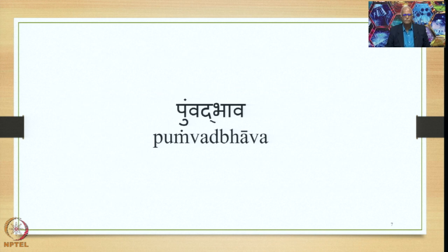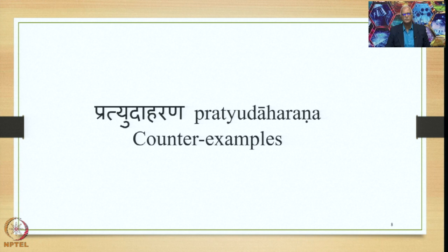Currently we are focusing on the Pumvad Bhava, a very important operation that happens mainly in the Bahuvrihi Samasa. We have already studied the sutra that states the basic conditions when fulfilled for the Bahuvrihi Samasa and the Pumvad Bhava operation to happen. In this lecture, in order to understand the sutra better, let us study the counter-examples — the Pratyudaharanas, as they are called in the tradition of Paninian grammar — one by one.